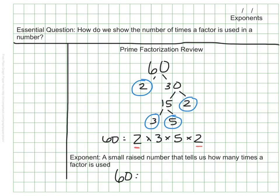60 is the prime factorization of 2 to the second power, because there are two factors of 2, times the 3 times the 5. And that's how we record the prime factorization of 60 using exponents.